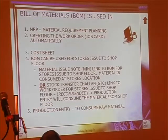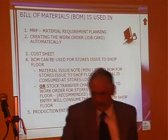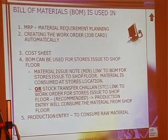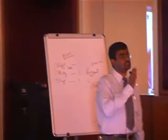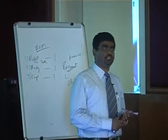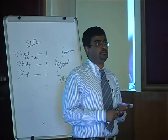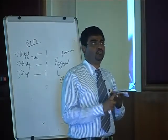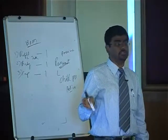BOM is used in several documents: material requirement planning, creating work orders automatically, cost sheets, and for stores issuing material to the shop floor. MRP means: if I need to make 100 pens, how many refills do I need to order? Simple — 100 refills for 100 pens. But some things are missing from this: first, how much stock is already in your store — otherwise you create excess inventory; second, POs already raised whose supply is still pending; third, what is the reorder level; and fourth, stock already reserved for a specific customer. These are all important things to take into consideration.